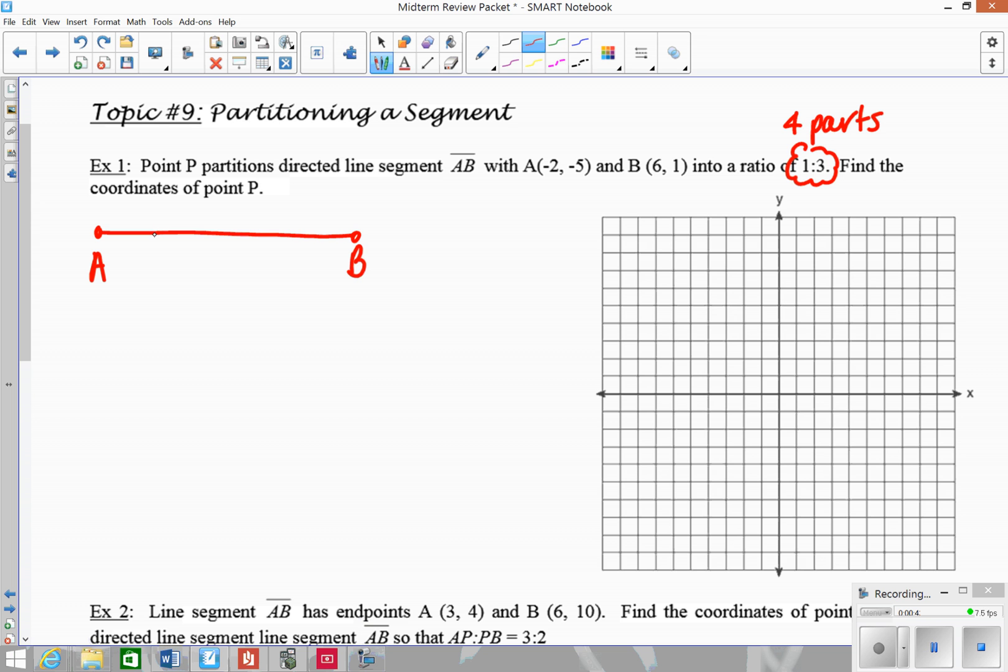That means we need to have 4 parts total, so we have 1 part to 3 parts. Basically, you have to divide your segment into 4 equal pieces. We have to look at point P being this spot right here, because at that spot I'll have a 1 to 3 ratio. So I have 1 part to 3 parts. You can do this on the graph. If I look at these points here, I have negative 2, negative 5, and then 6, 1.